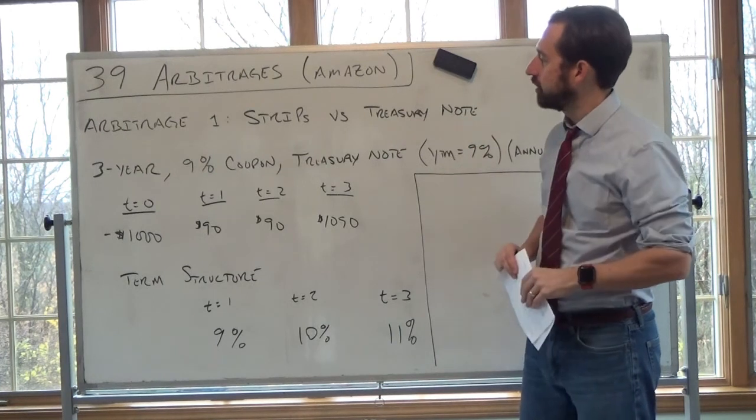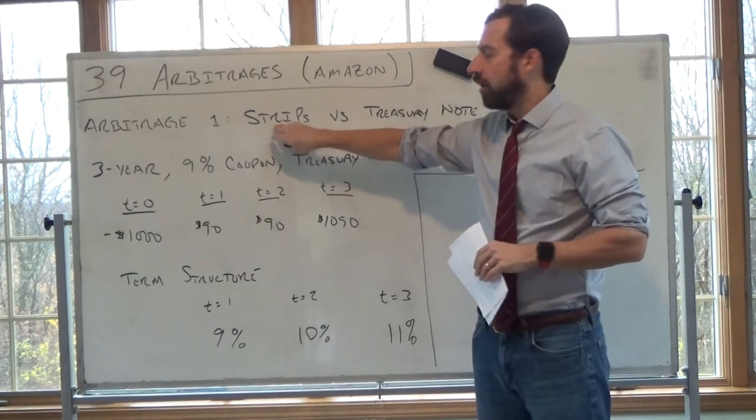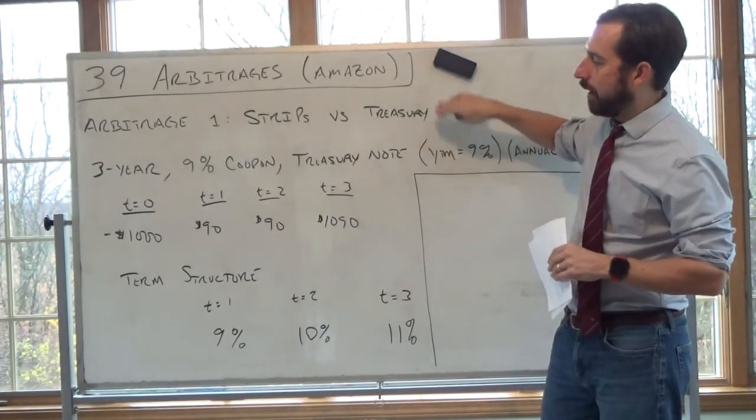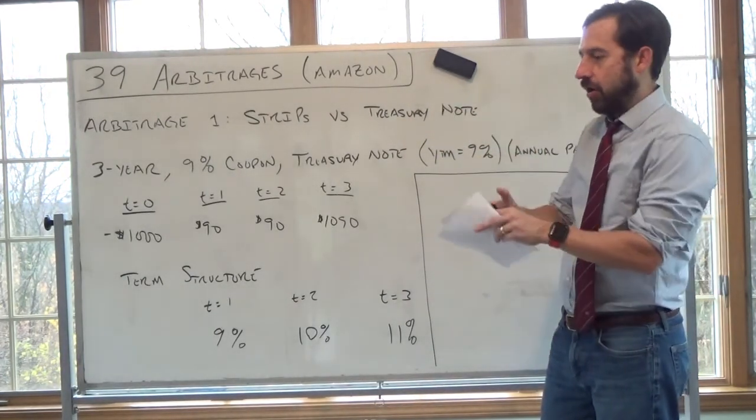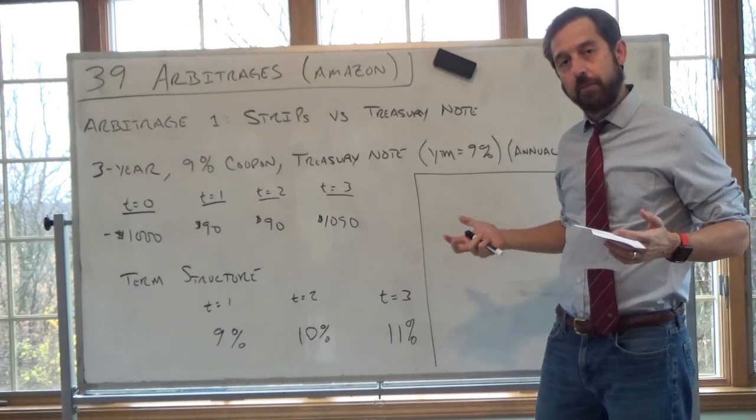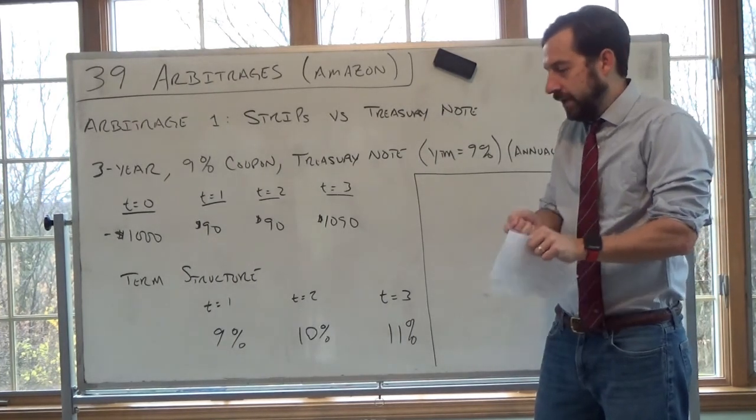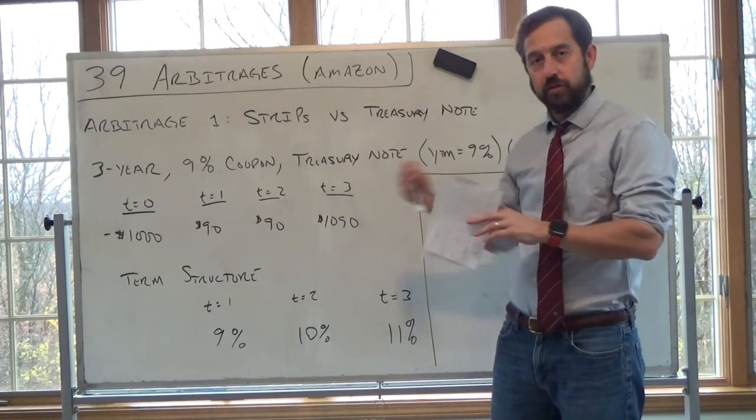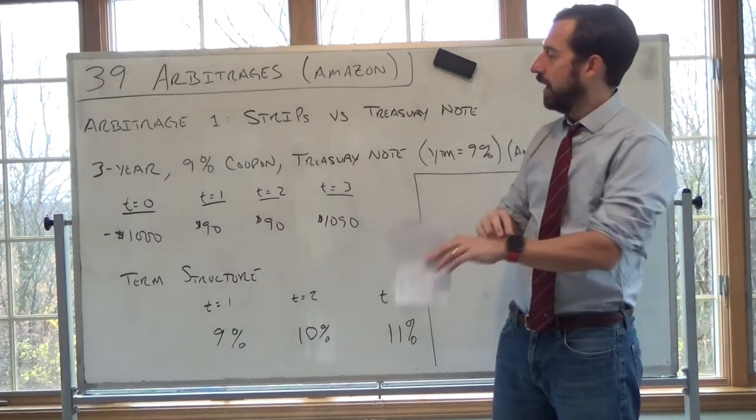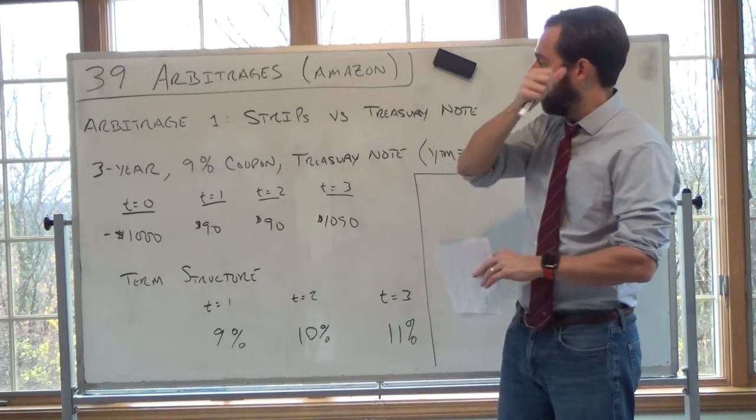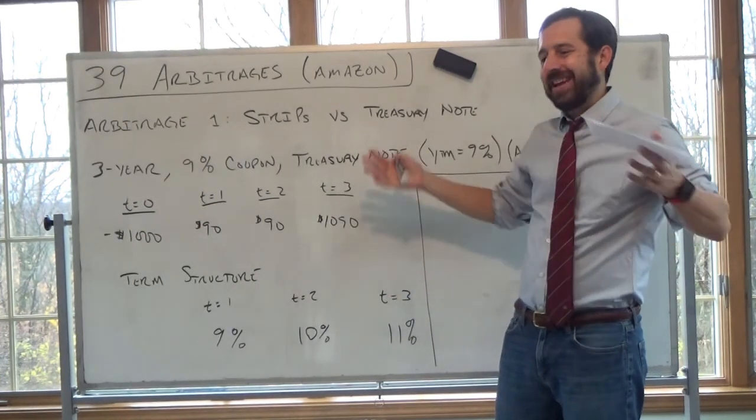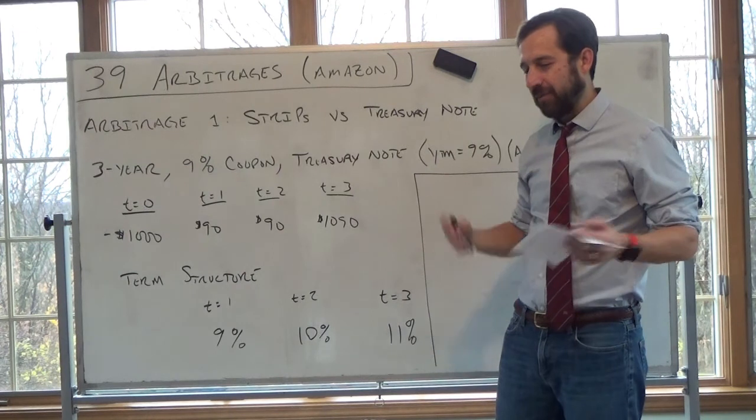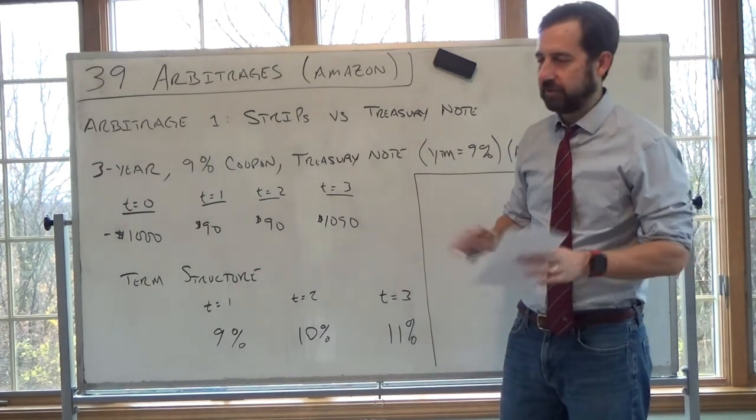So going over the first arbitrage here. Strips, these are treasury bonds, notes, that are stripped apart into zero-coupon bonds. So they're traded. So the idea here is what primary dealers do, these are major banks, they have inventory of treasuries. And let's say, just for example, a coupon rate on a treasury is 10%.